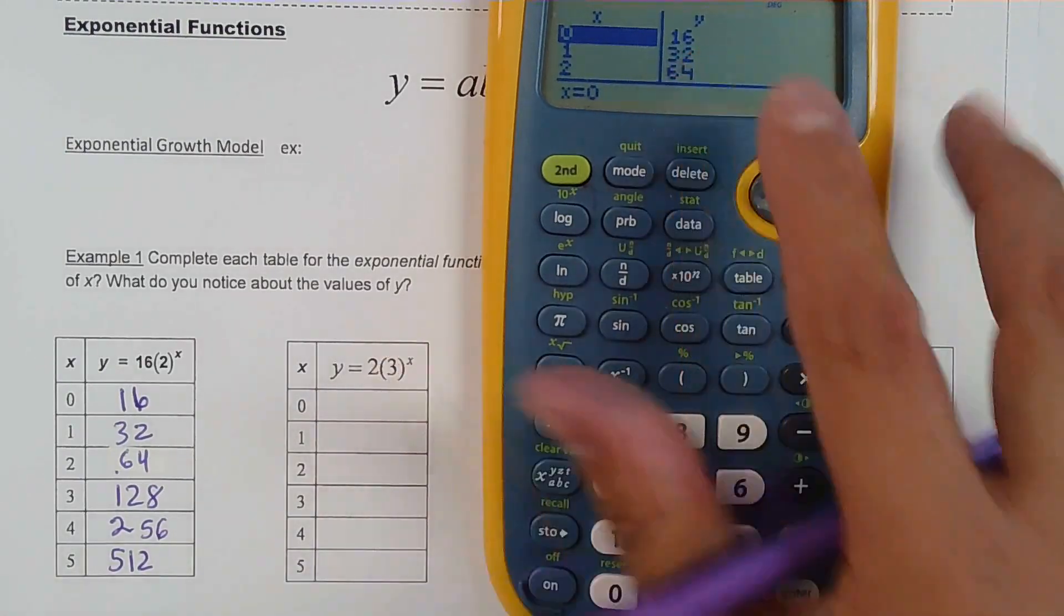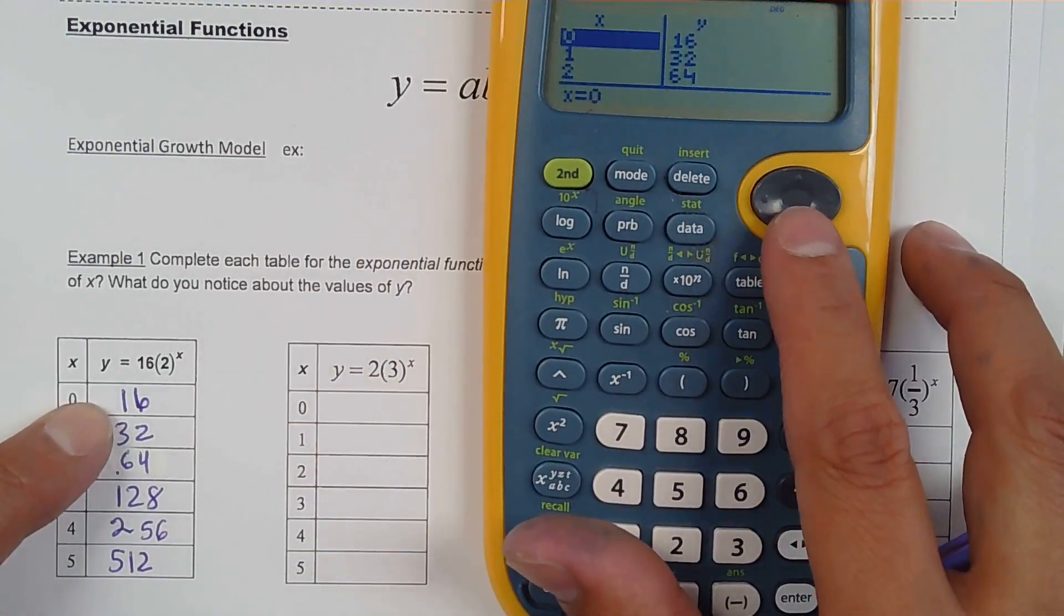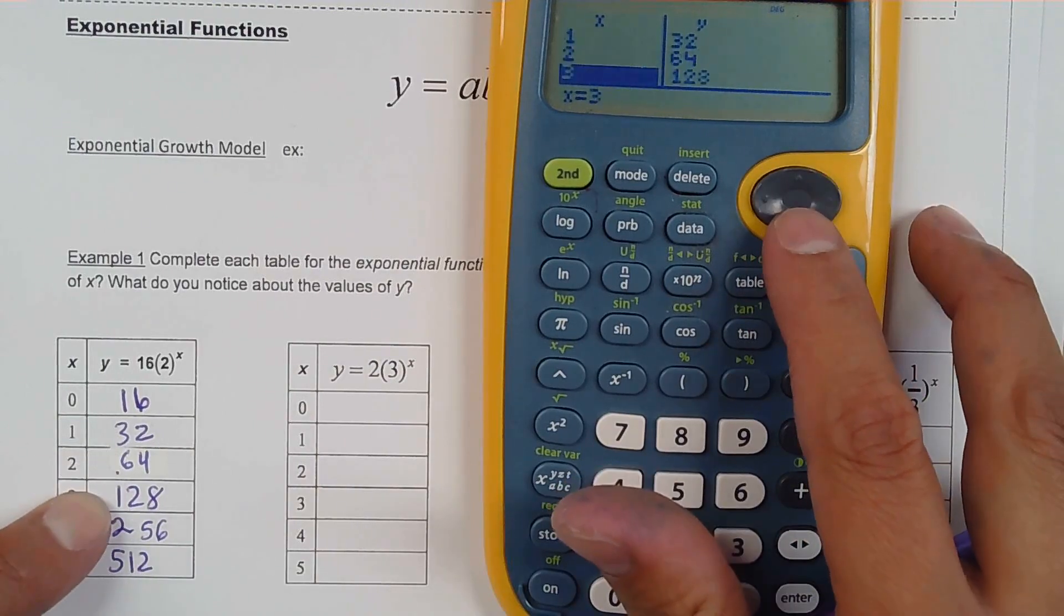And here are your outputs. Look at that. How beautiful that is. 16, 32, 64, 128.